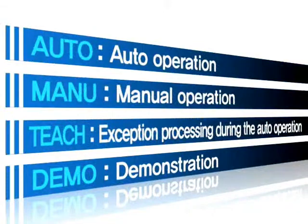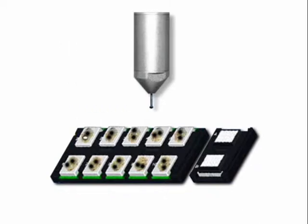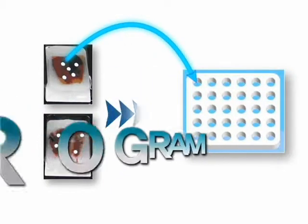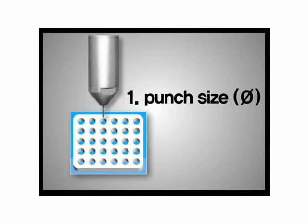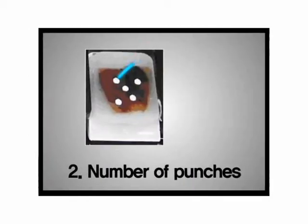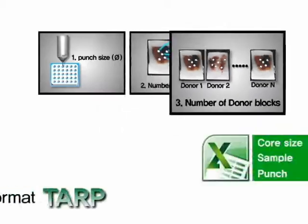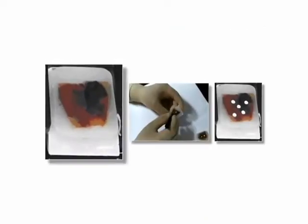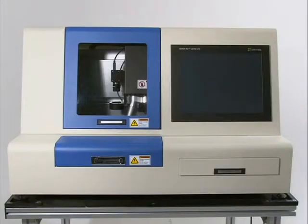You can use four operation methods in this instrument. Auto automatically moves a tissue sample from a donor block to a recipient block. For auto movement, programming should be done, and programming is very simple — just set three parameter values: the punch size, the number of punches in each donor block, and the number of donor blocks, in an Excel file offered by Unitma. The file with the three parameter values is called the TARP file. Remember to mark the target area to extract the sample tissue from the donor block before starting the auto operation.